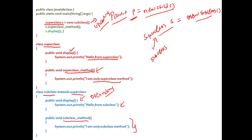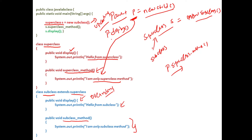How does upcasting work? Using this parent reference, you can invoke all the methods inside the superclass. If I do P dot superclassMethod, that's a method only in the superclass, so I can access it. But if I perform P dot display — display is overridden in the subclass — it will automatically invoke only the overridden method. If you use the parent reference and call a method that is overridden, automatically only the overridden method will be invoked. This is how upcasting works.